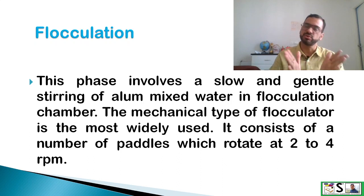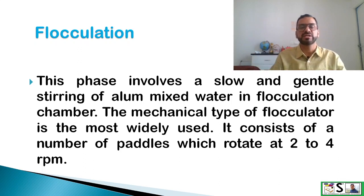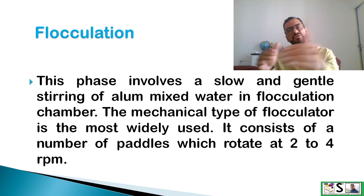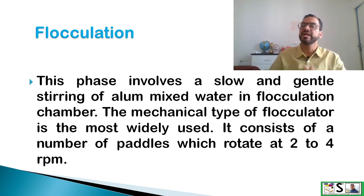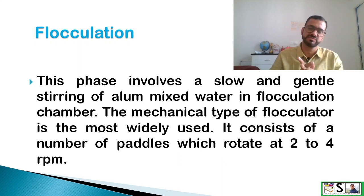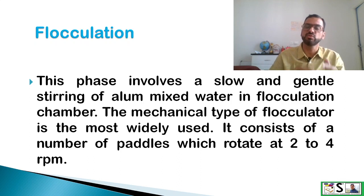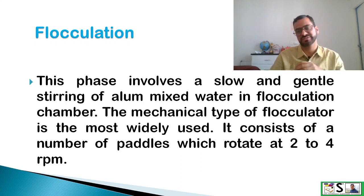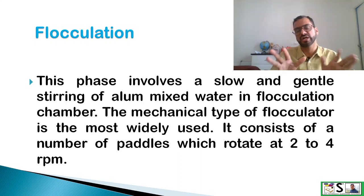The next phase is flocculation. The water mixed with alum is sent to the flocculation chamber where slow mechanical stirring causes proper flocculation or coagulation in the water. The mechanical type of flocculators is most widely used in water treatment plants and consists of a number of paddles which rotate at 2 to 4 rpm.